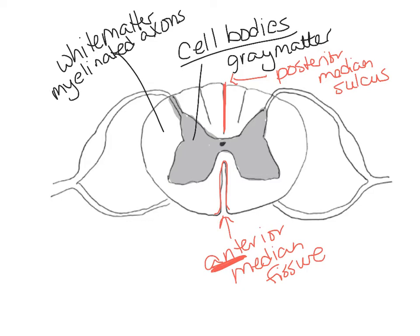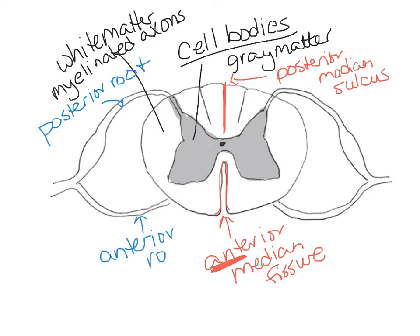There are extensions coming off the spinal cord. The one on the posterior side is called the posterior root - another acceptable name is the dorsal root. The newer edition of the book calls it the posterior root. On the other side, where we have the anterior median fissure, this is called the anterior root. Where the two of them merge together we call that the spinal nerve.